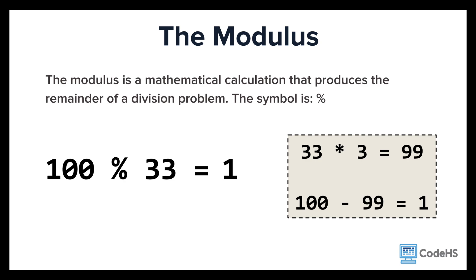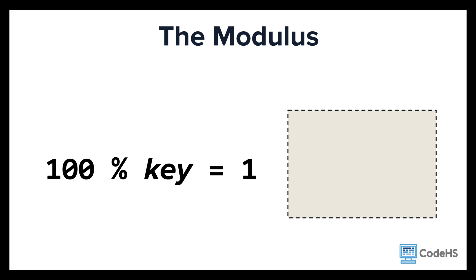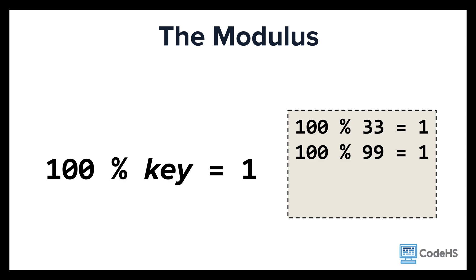So how is this helpful for cryptography? Let's try to reverse engineer this problem. If we know that the output or the answer is 1, let's attempt to work backwards and find the input or the key. We know that 100 mod 33 equals 1, but 100 mod 99 also equals 1, and 100 mod 11 equals 1 as well. So which one is it? This is an example of how a key can be hidden really well using modular math.